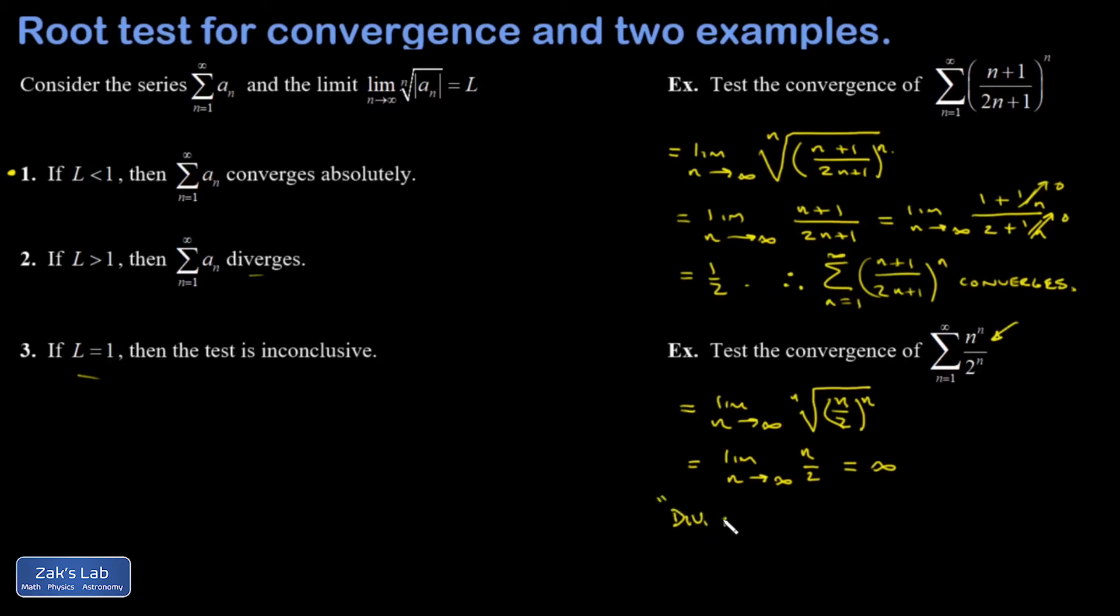Again, this was called the divergence test or the nth term test. You just look at the limit of the individual terms. If those terms aren't going to 0, you have no chance of your series converging. And in fact, those terms are becoming infinite, so this series never even had a chance of converging.